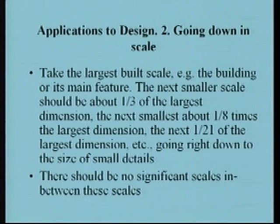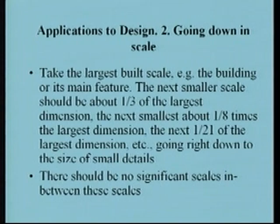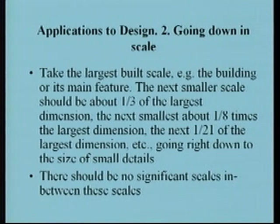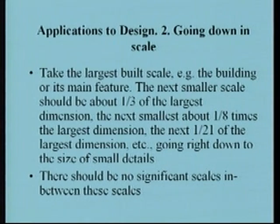The next smaller scale should be one third of the largest dimension, the next about one eighth, the next about one over 21, and so on. How far down do you go? Since the universal scaling rule is an infinite sequence, we can go right down to microscopic sizes. You don't need all those scales precisely — absolutely not — but again, this is a check for the relative sizes of elements in a design. Going down in scale means going down to one meter, half a meter, 20 centimeters, 10 centimeters, 3 centimeters, 1 centimeter, half a centimeter.